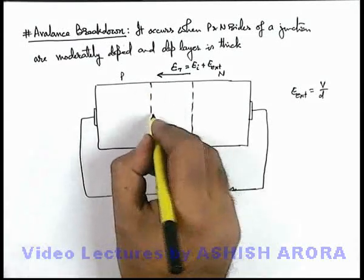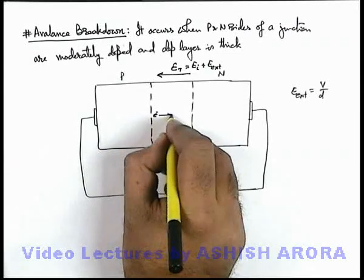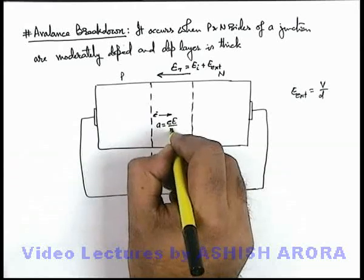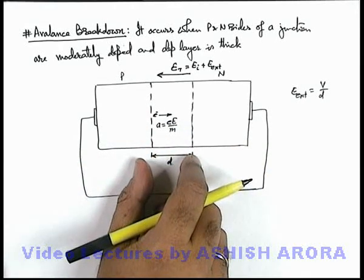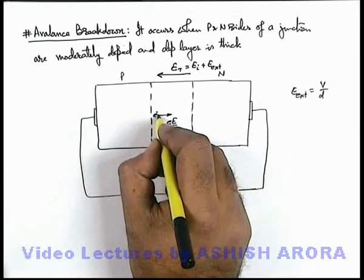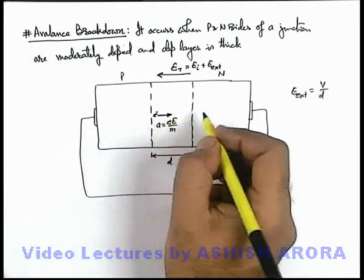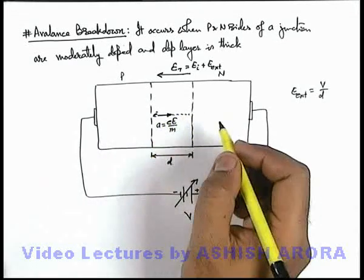due to this electric field electrons from one side will start accelerating onto the other side. These will be having an acceleration given as eE by m. And as the width is large for the depletion zone, the electrons which will accelerate through the depletion layer will attain high speeds when these electrons will reach the other terminal.